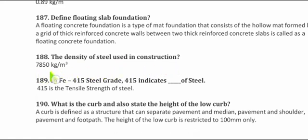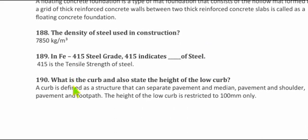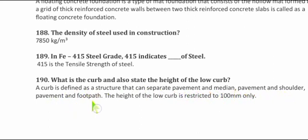Question 187: What is a kerb/curb, and what is the height of a low kerb? A kerb is a structure that separates the pavement from medians, shoulders, and footpaths. The height of a low kerb is restricted to 100 mm.